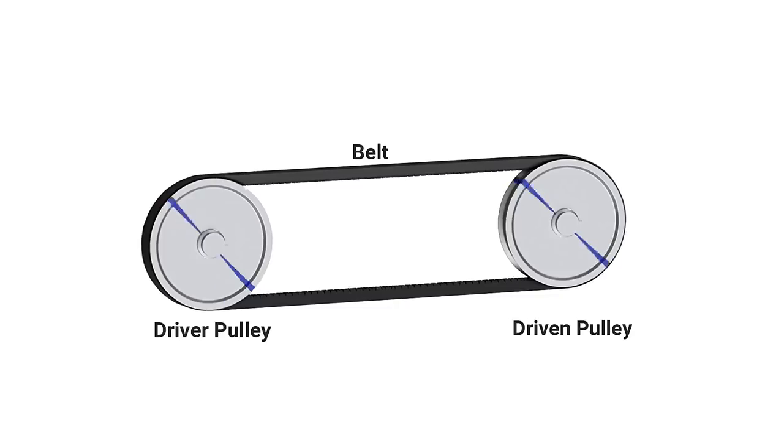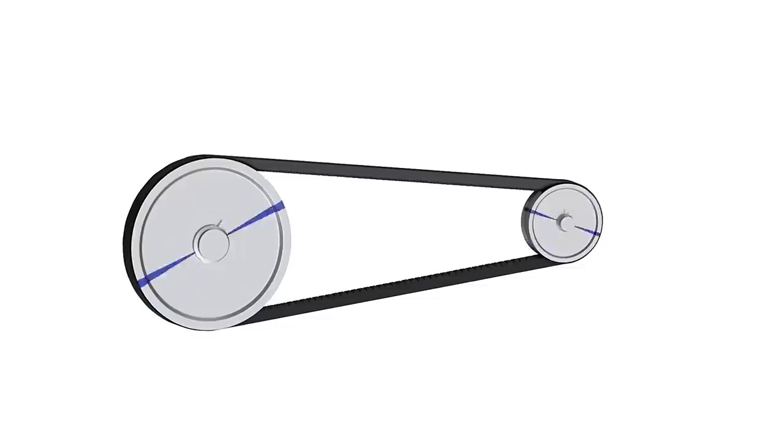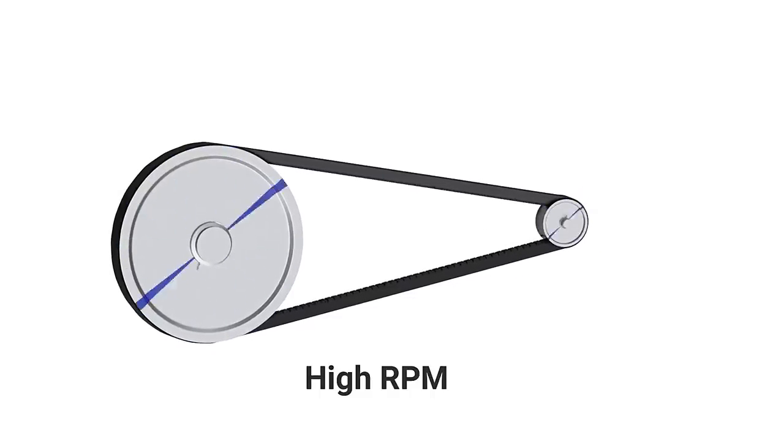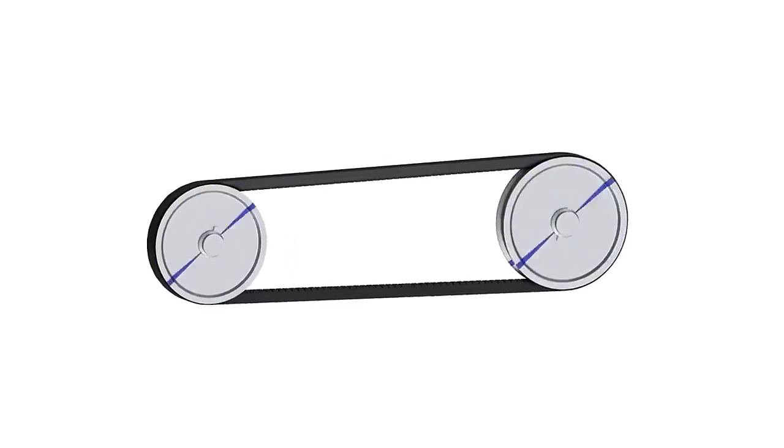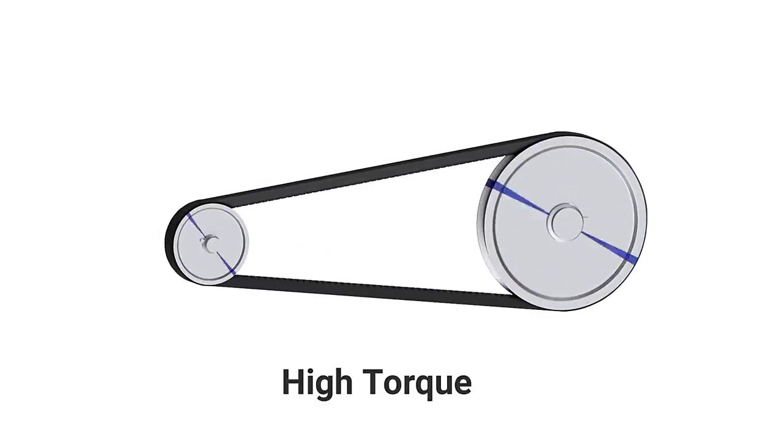High RPM is obtained by increasing the diameter of the driver pulley and decreasing the diameter of the driven pulley. High torque is obtained by doing the opposite. This system allows us to achieve infinite number of drive ratios between the minimum and maximum limits.